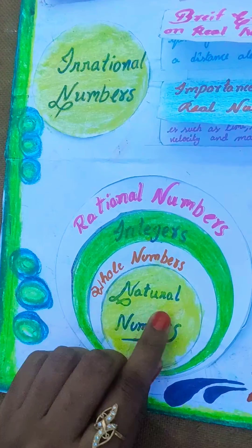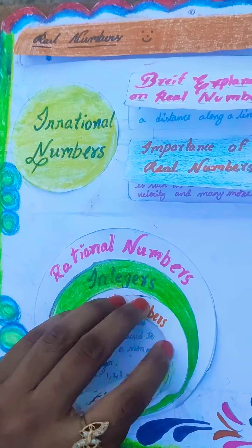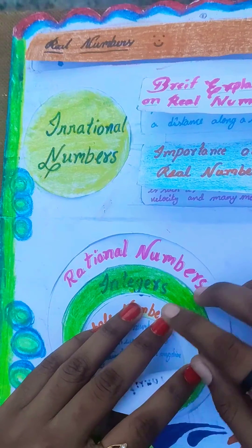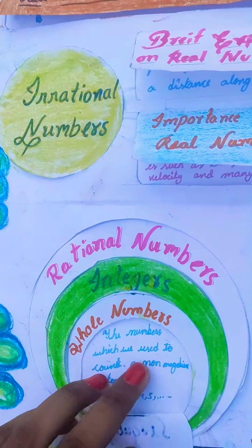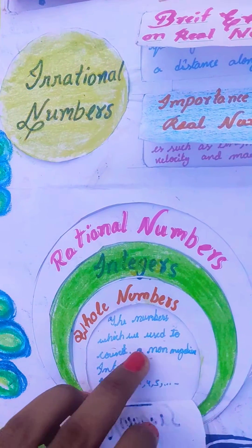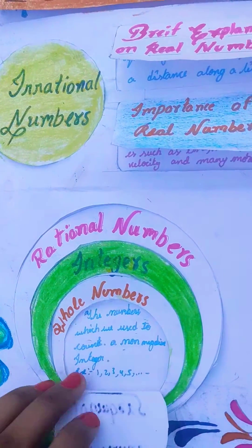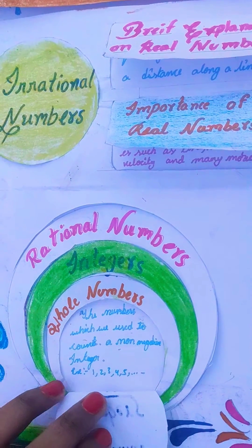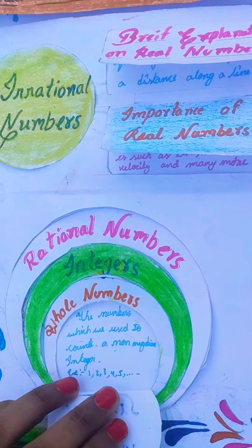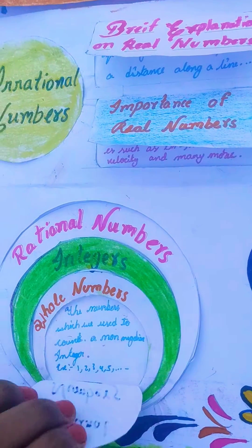Now, natural numbers. The numbers which we use to count. Example: 1, 2, 3, 4, 5, and so on.